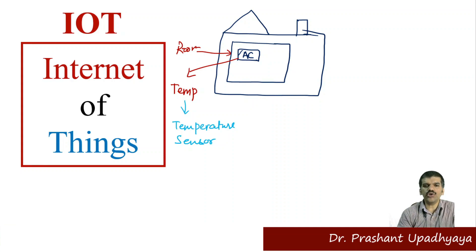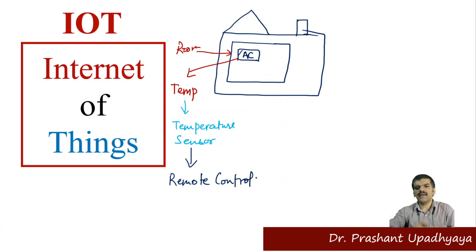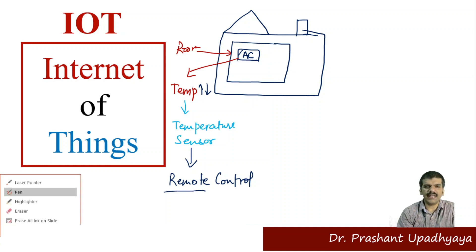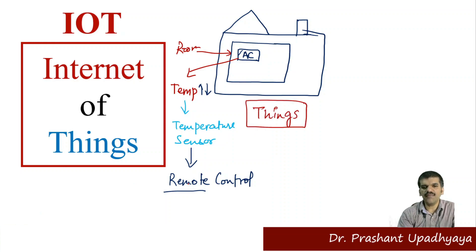The temperature sensor displays the current temperature on the AC display board or on the remote control — because some ACs do not have a display on the unit itself. We control this temperature by increasing or decreasing it with the help of a remote. This entire structure — the AC and its remote — is known as the 'thing'.